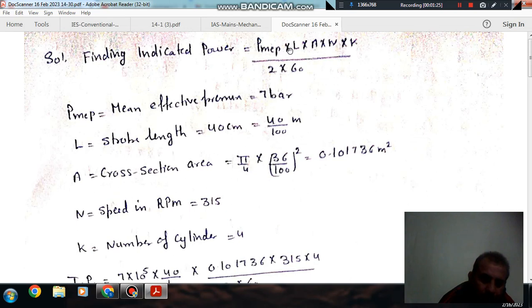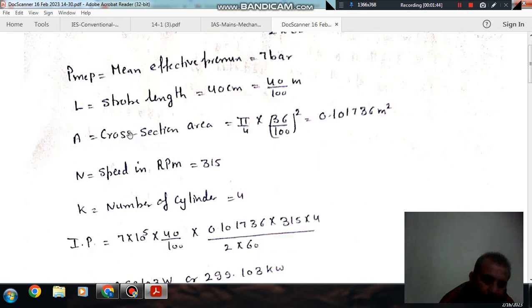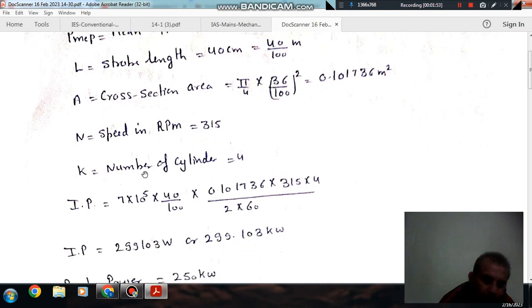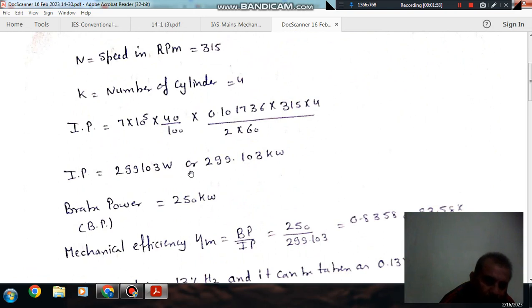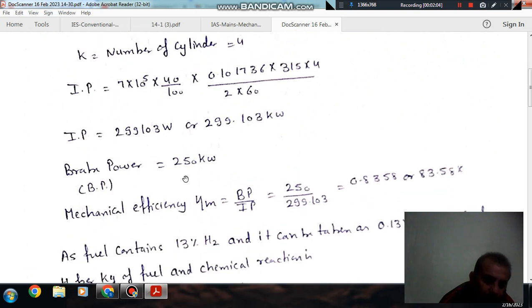So IP equals P times L times A times n times K divided by 60. 2 is used because it's 4-stroke, K is 4 number of cylinders, A is cross-sectional area equals pi over 4 times 0.36 squared equals 0.101736 m squared, n equals speed in RPM equals 315, K equals number of cylinders equals 4. So IP comes out as 299.103 kW and BP is given as 250 kW, so mechanical efficiency is BP over IP, that is 83.58 percent.